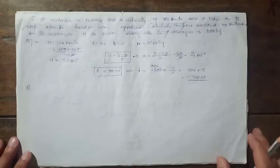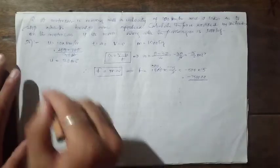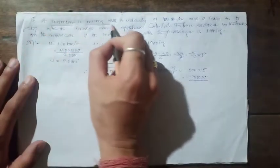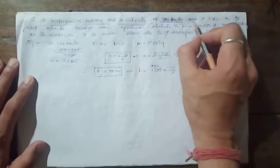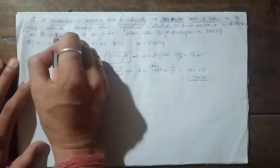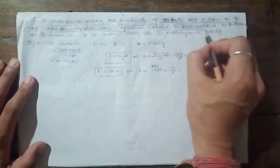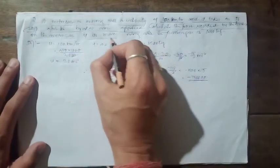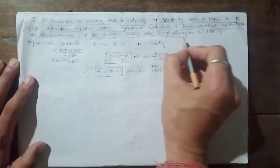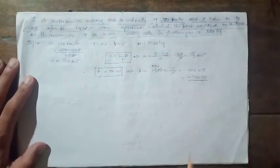Let's discuss one more problem. A motor car is moving with a velocity of 108 km/h and it takes 4 seconds to stop after the brakes are applied. Calculate the force exerted by the brakes on the motor car if its mass along with the passengers is 1000 kg.